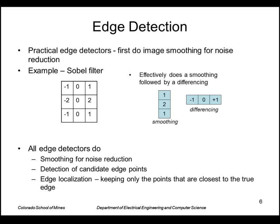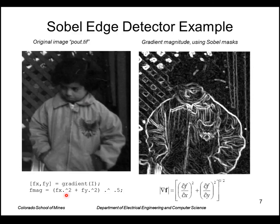Then we go ahead and detect candidate edge points and localize the points. An example of the Sobel on this image: we apply the Sobel x and Sobel y operators and combine them to take the magnitude of the gradient. So that gives this result.